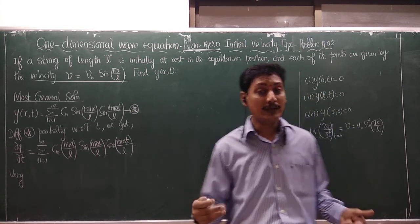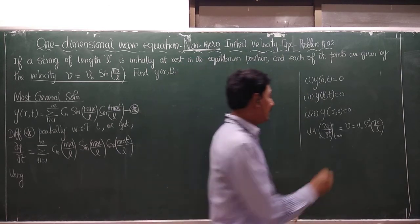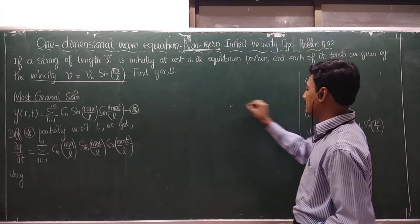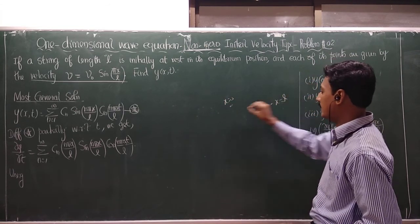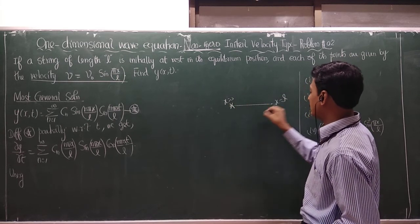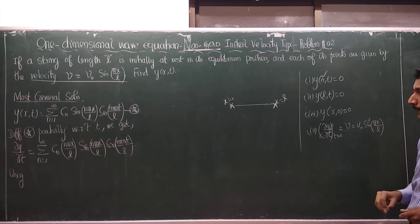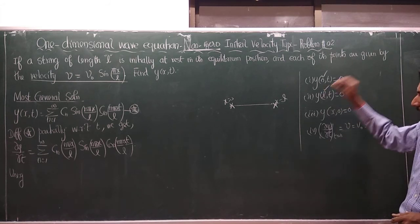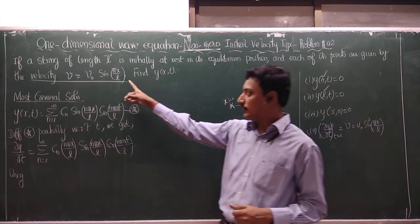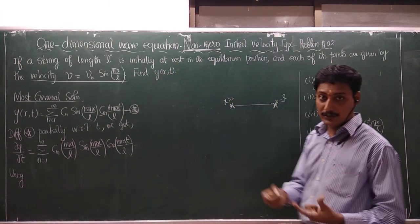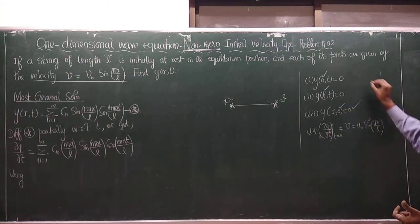The boundary conditions are: at x equal to zero and x equal to L, the two endpoints of the string are fixed, so no displacement takes place at either end. Additionally, since the string starts from its equilibrium position, the displacement y is zero when t equal to zero.